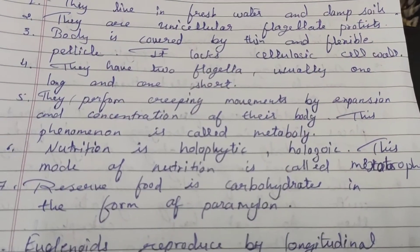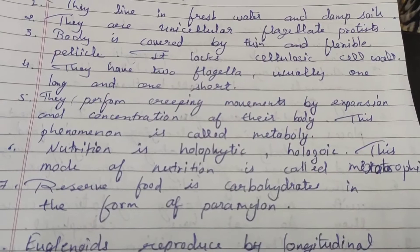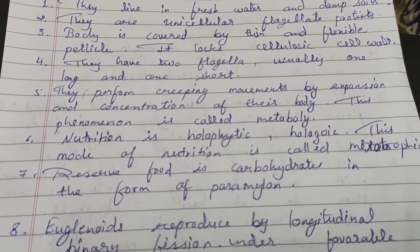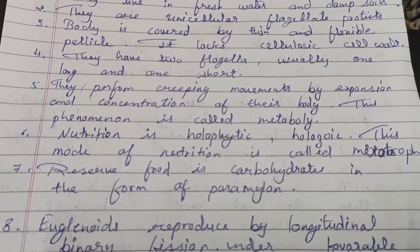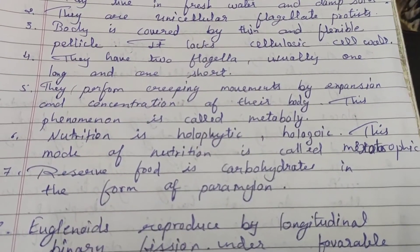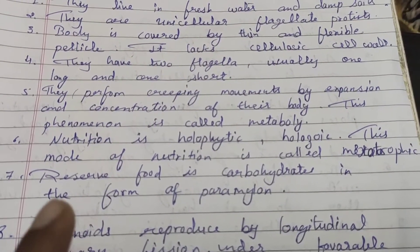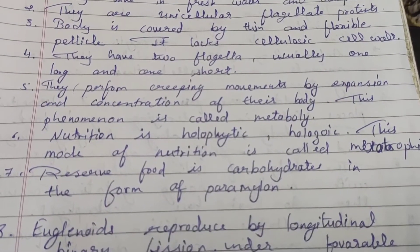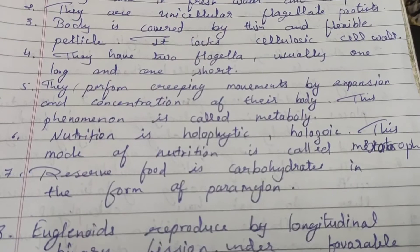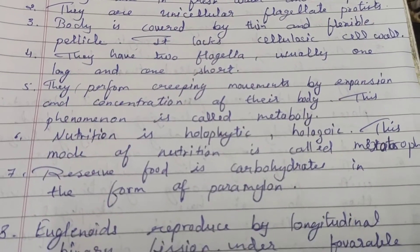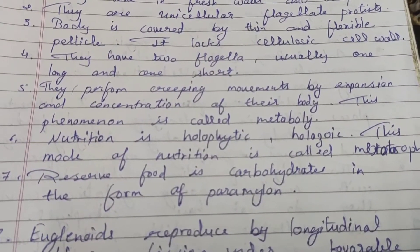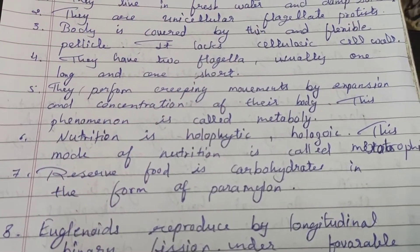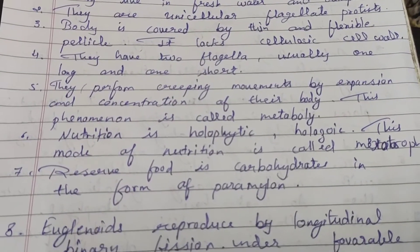One flagellum is long and one is short. If we talk about the creeping movement, euglenoids show creeping movement with expansion and contraction of their body. They expand the body and then contract it, and ultimately creep and move. This phenomenon is called metaboly.